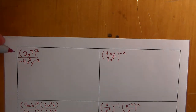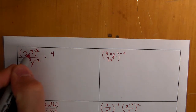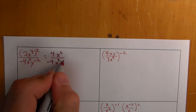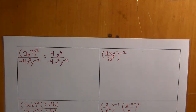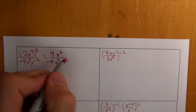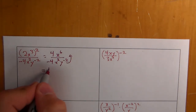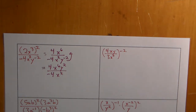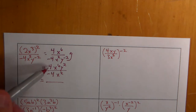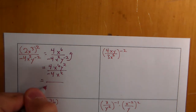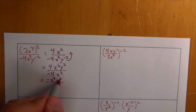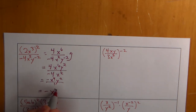For the next problem, apply the power rule first: 2 squared is 4, x to the third squared is x to the sixth. In the denominator we have negative 4, x squared, and y to the negative 2. Move y to the negative 2 up to become y squared. Now combine the coefficients: 4 over negative 4 is negative 1, so the negative goes on top. X to the sixth over x squared has 4 more on top: x to the fourth. Y squared stays. The answer is negative x to the fourth y squared.